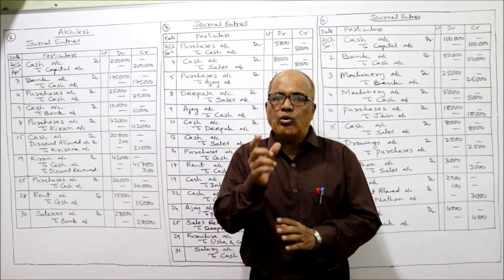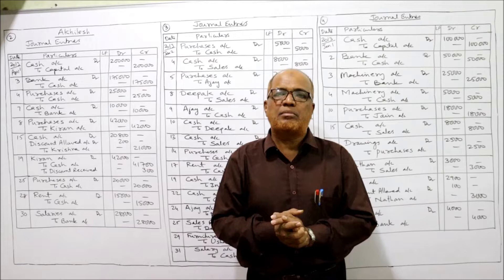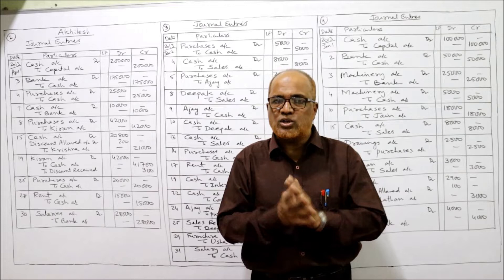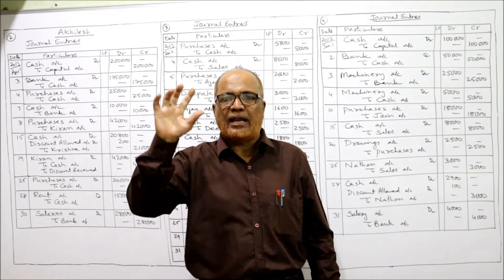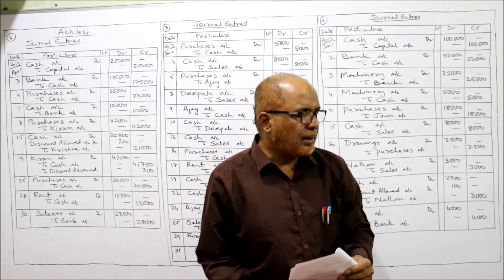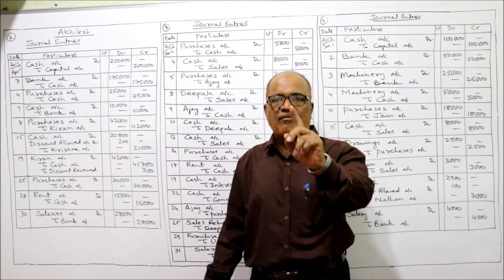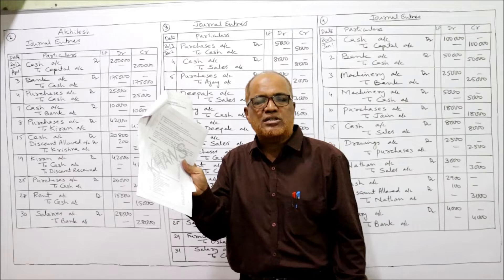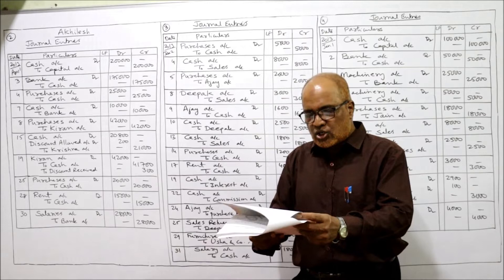Every student must be completely aware of how to pass the journal entry — which account should be debited, which account should be credited. If you have not watched the earlier videos, go to the playlist of my channel, select Financial Accounting One, select the topic Journal and Ledger, and watch the first and second videos. Before starting the second problem, I expect viewers to have a printout of the problems from the link in the description.